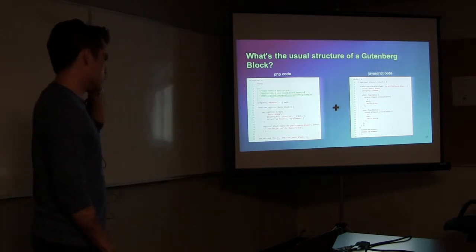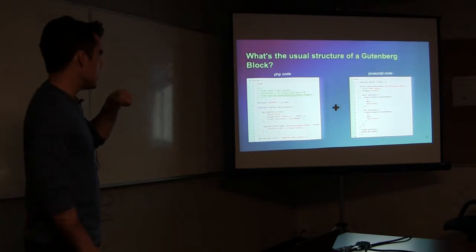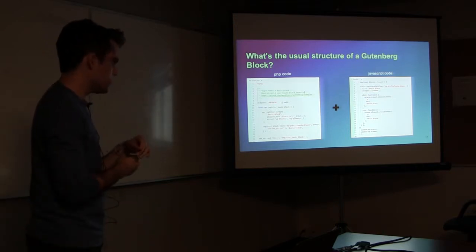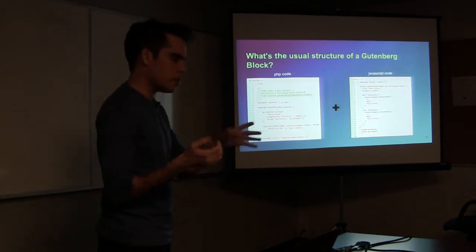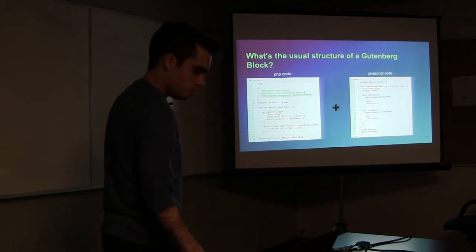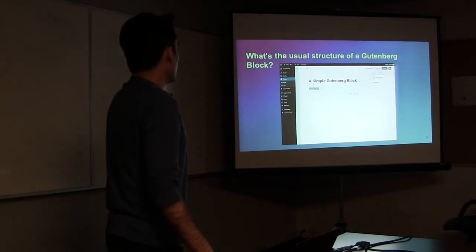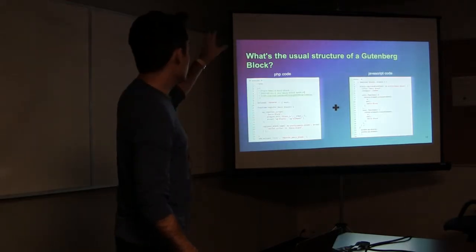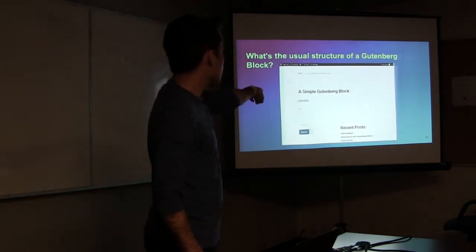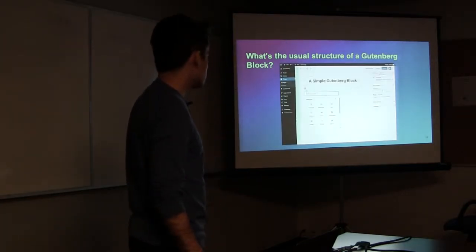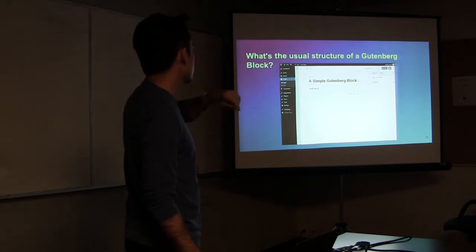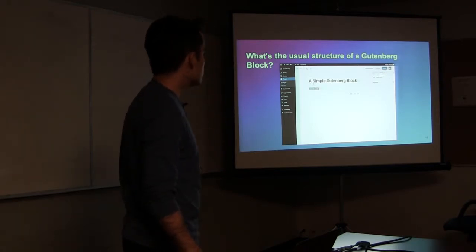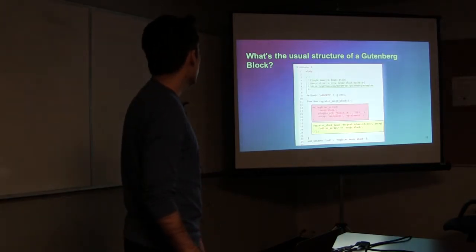I'm going to make this presentation available at the end, and the code — I created two blocks here — I'm going to make available on my GitHub account. This block here will become this block. Vanilla plain text block — basic block. It doesn't do anything, it's just a hello block. Once I update it and view the page, that's exactly what I showed already.